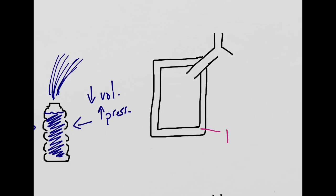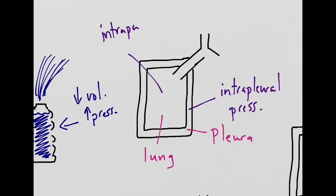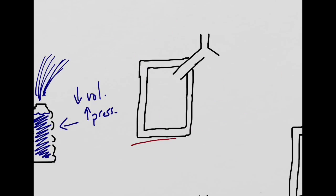Boyle's Law can be applied to the lung when we talk about pulmonary ventilation. Around the lung organ, we have the pleural sac, and here we see on the inside the lung. Inside each of these areas, we have different types of pressure. In the pleural sac, we have the intrapleural pressure, and inside the lung, we're going to have the intrapulmonary pressure.